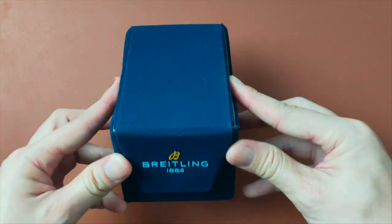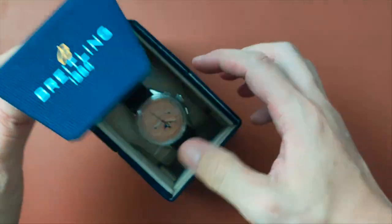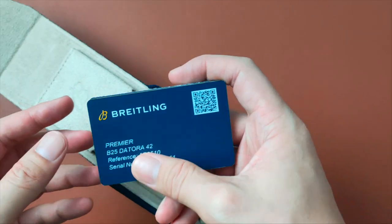This is the Breitling Premier B25 Datora 42. It is the most refined Breitling chronograph with a complete calendar and moon phase.